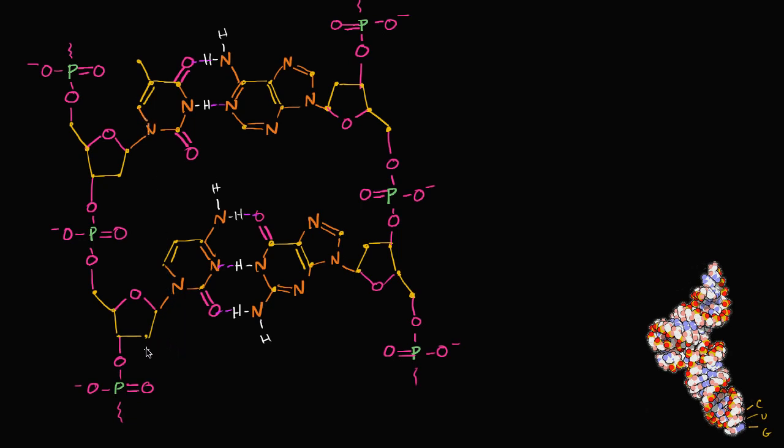We can look at the telltale signs that this is DNA. In particular, we can look at the five carbon sugar on its backbone. Let's number the carbons: one prime, two prime, three prime, four prime, five prime.